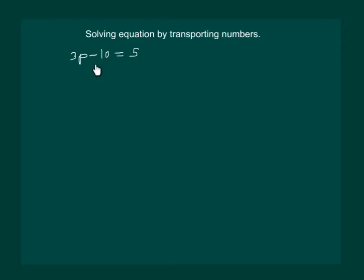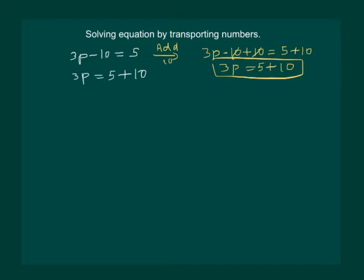Now, we can add 10 on both sides of the equation and then solve it, or simply transport minus 10 to the other side of the equation by changing the sign. This will give us 3p equal to 5 plus 10. Notice that if we had added 10 on both sides, we would have got 3p minus 10 plus 10 equal to 5 plus 10, and finally 3p equal to 5 plus 10, and both these are same.